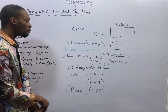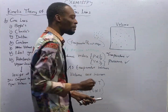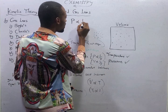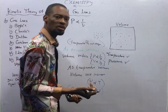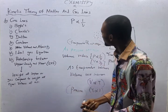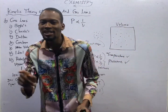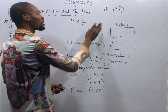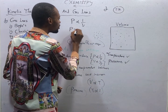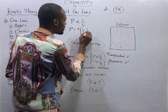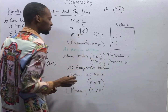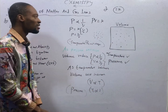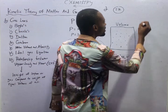Anytime you hear that temperature does not change or temperature remains constant, just know that we are looking at Boyle's Law. Charles' Law says that the volume of a fixed mass of gas is directly proportional to its absolute temperature, provided pressure is constant. In Boyle's Law, temperature is constant; in Charles' Law, pressure is constant. If pressure is inversely proportional to volume, we convert the proportionality symbol to equality by introducing a constant k, so pressure equals k times one over V.